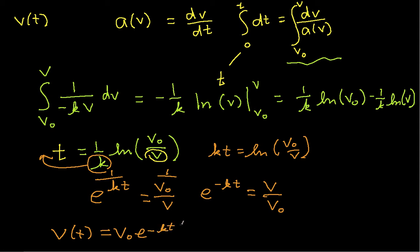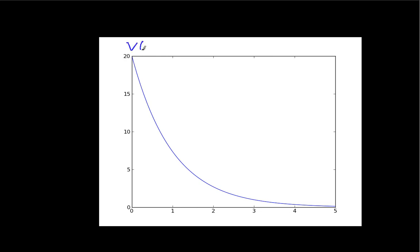So when the acceleration is a negative constant times v, the velocity as a function of time is the initial velocity times e^(−kt). I've graphed this: for v₀ = 20 meters per second and k = 1, the result is just a decaying exponential — as time goes forward, velocity decays exponentially toward zero.